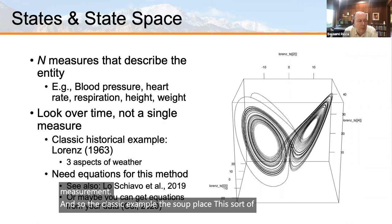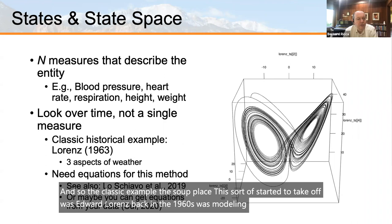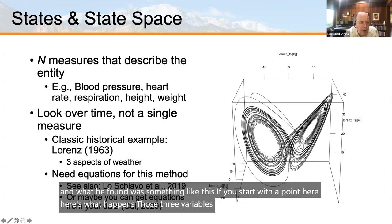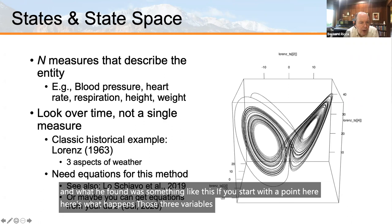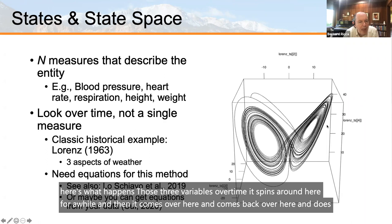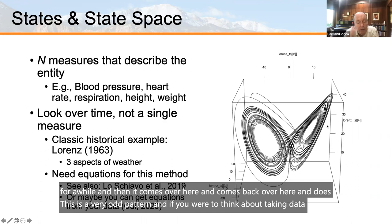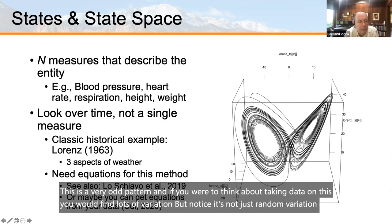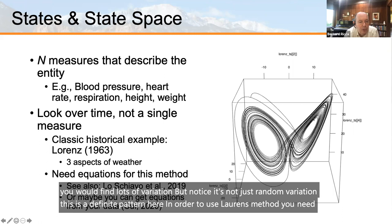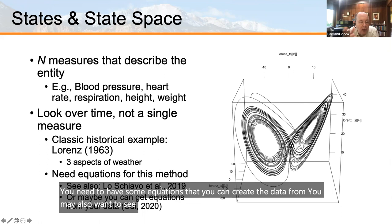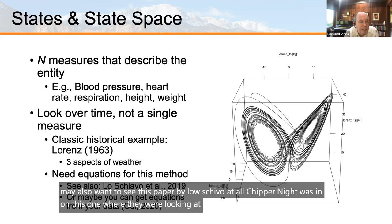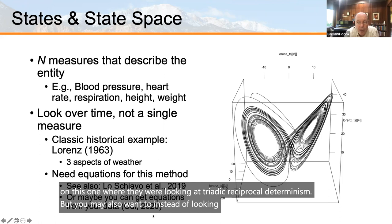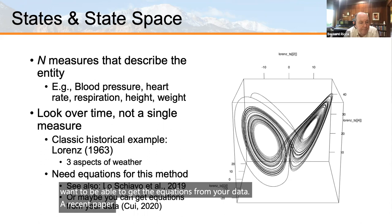The classic example where this took off was Edward Lorenz in the 1960s modeling weather. He developed equations and found something like this: starting from a point, three variables over time spin around in a very odd pattern — it's not random variation, it's a definite pattern. This is the Lorenz butterfly. In order to use Lorenz's method, you need the equations. You may also want to get the equations from your data, as a recent paper by Chu did.